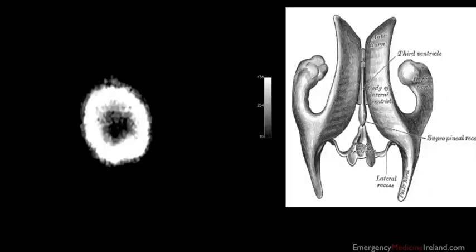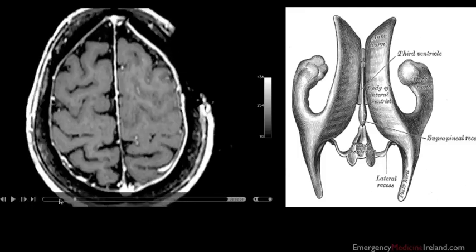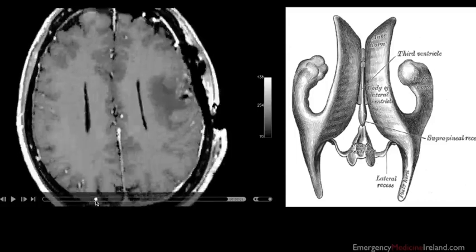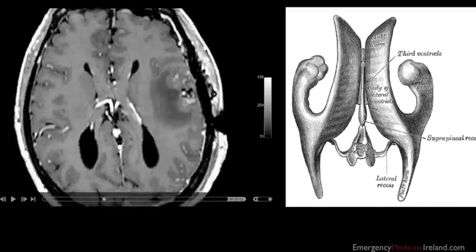We need to talk about the ventricular system. On the right we have one of the old Gray's plates showing the two lateral ventricles — the C-shaped structures that curl around — a midline third ventricle, and the fourth ventricle. I'm going to take you through some MRI scans to identify them. Try to ignore the obvious pathology and focus on the ventricular system. We can see on both sides the anterior and posterior horns of the two lateral ventricles.